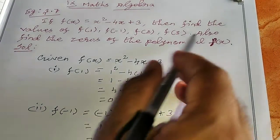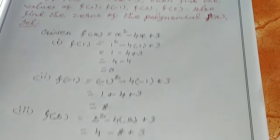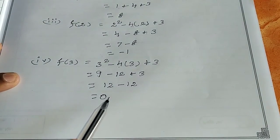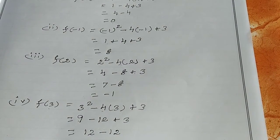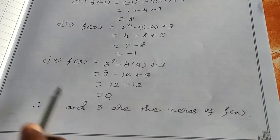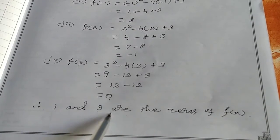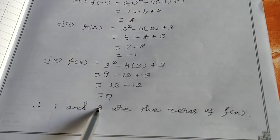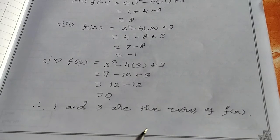Now find the zeros of the polynomial. We found four answers. Since f(1) = 0 and f(3) = 0, applying x equals 1 gives 0 and x equals 3 gives 0. So 1 and 3 are the zeros of f(x). The polynomial has two zeros: 1 and 3. That's all — this sum is over, thank you.